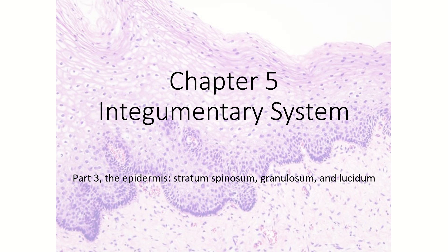This next section is going to talk about several layers that are superficial to the stratum basale. Look at this image in the background of my slide here — this is a microscope slide of the integumentary system. This part is the epidermis, and this is the stratum basale right here. You can see the nice tall columnar cells, and then up above that, kind of cuboidal cells, and those are the layers we're going to talk about next.